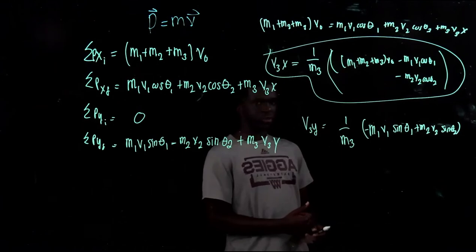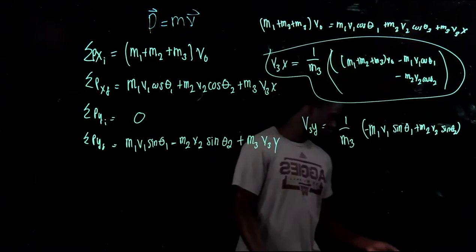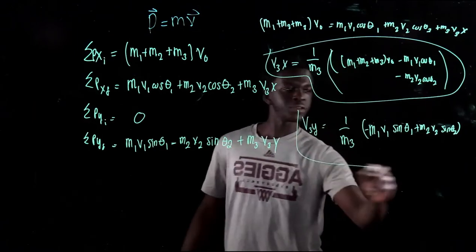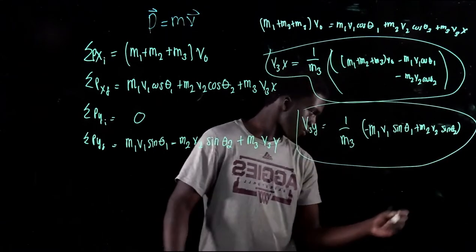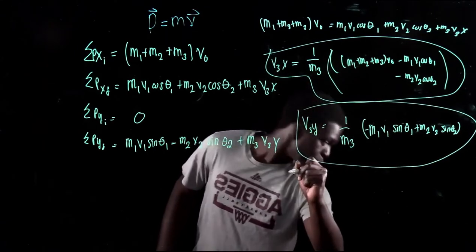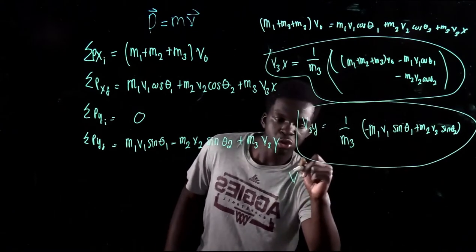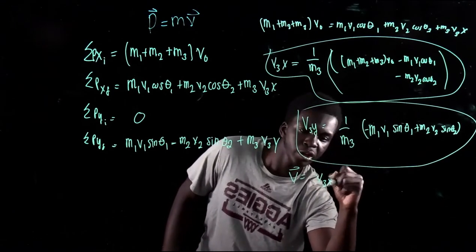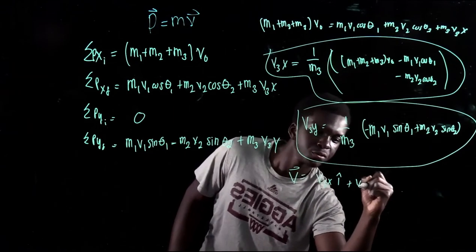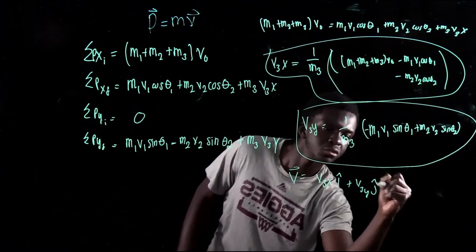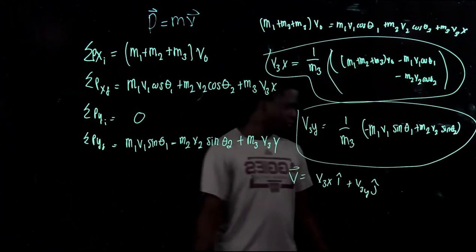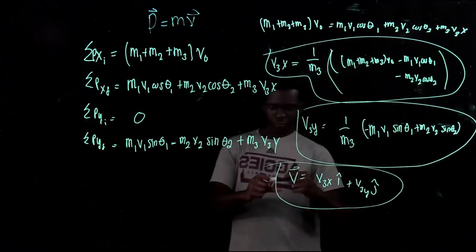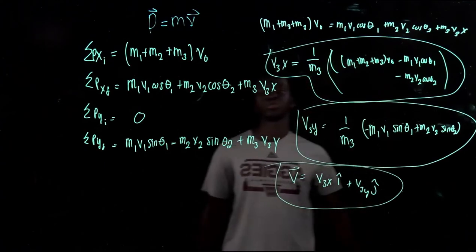The signs match the expected answer — just reversed, but it's the same result. The full velocity vector is written as v3 equals v3x î plus v3y ĵ. That is the final equation for question two.